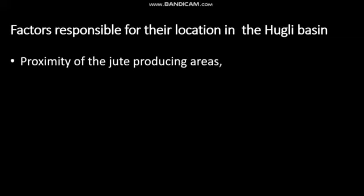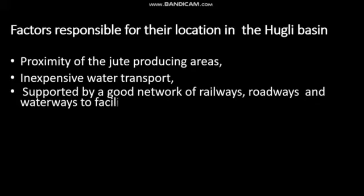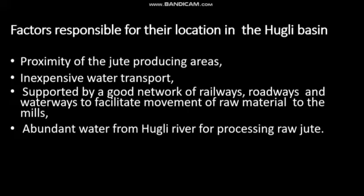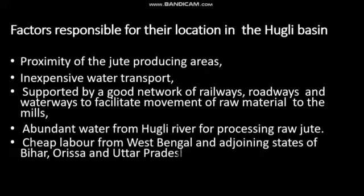The factors responsible for the location of jute mills in the Hooghly basin include: first, proximity to jute producing areas, as this area has a favourable climate for cultivation of jute. Second, inexpensive water transport supported by a good network of railways, roadways and waterways to facilitate movement of raw material to the mills. While processing raw jute, abundant water from the Hooghly river is required.